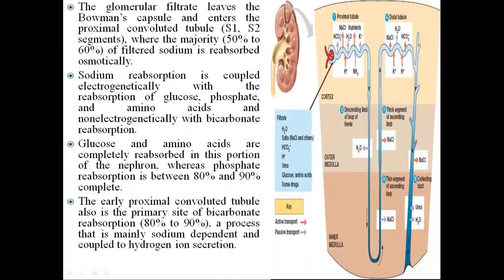The glomerular filtrate leaves Bowman's capsule and enters the proximal convoluted tubule, where 50% to 60% of filtered sodium is reabsorbed osmotically. Sodium reabsorption is coupled electrogenic ally with reabsorption of glucose, phosphate, and amino acids, and non-electrogenically with bicarbonate. Glucose and amino acids are completely reabsorbed in this portion, while phosphate reabsorption is 80-90% complete. The early PCT is also the primary site of bicarbonate reabsorption — 80 to 90% — a sodium-dependent process coupled to hydrogen ion secretion.